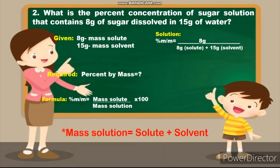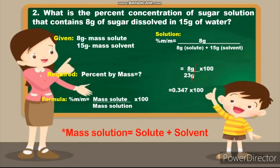Let us substitute 8 grams, which is the mass of solute. And then, in order to get the mass of solution, we simply add 8 grams, which is the solute, and 15 grams, which is the solvent. And it will give us 8 grams divided by 23 grams times 100. Remember to cancel the unit, and if we divide 8 by 23, it will give us 0.347, but we still have to multiply it by 100. So, it will give us 34.8%.